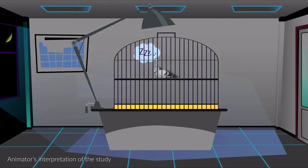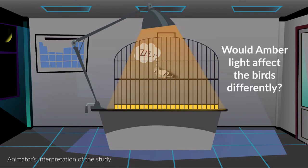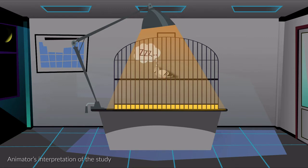So we wondered whether using amber streetlights, filtered to remove blue wavelengths of light, might also benefit sleep in birds. But when we compared the effects of amber and white light on pigeons, we found no difference.